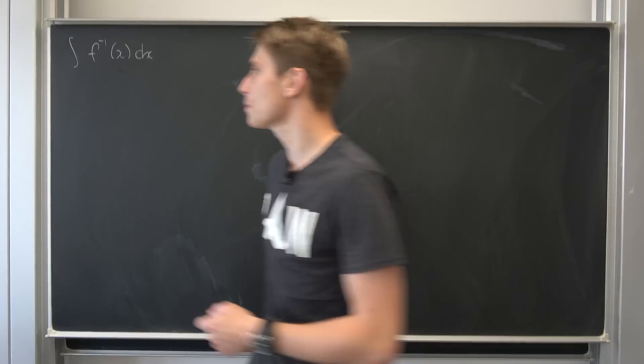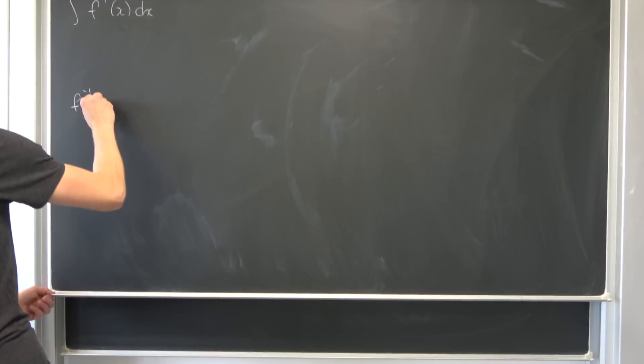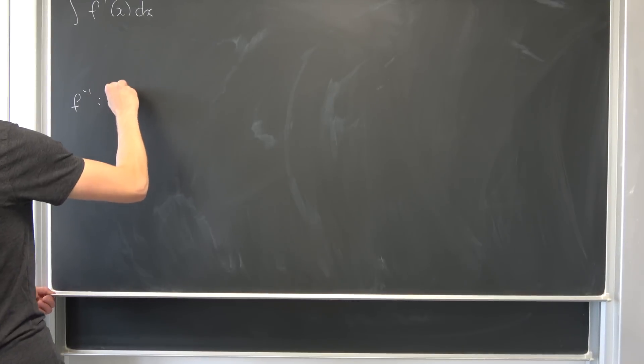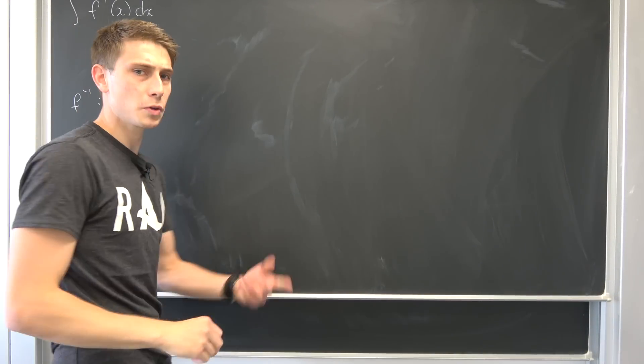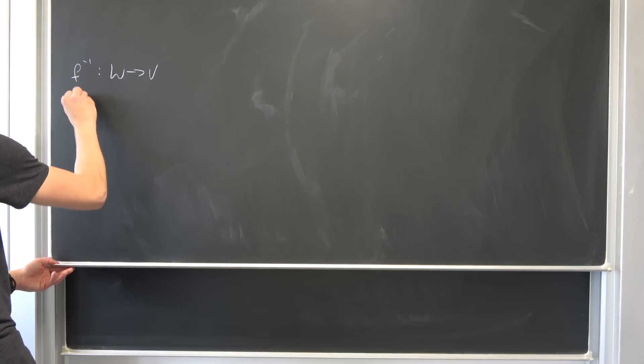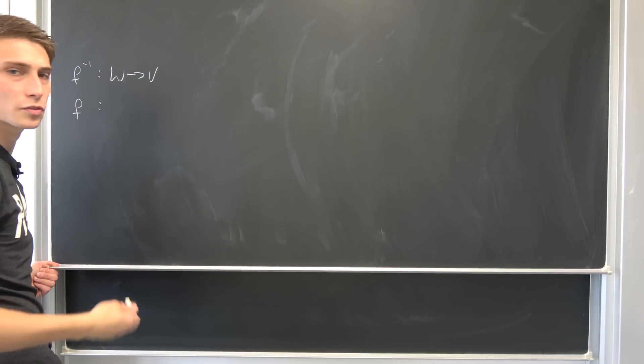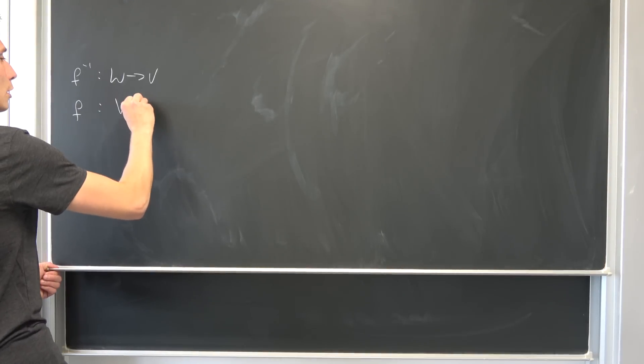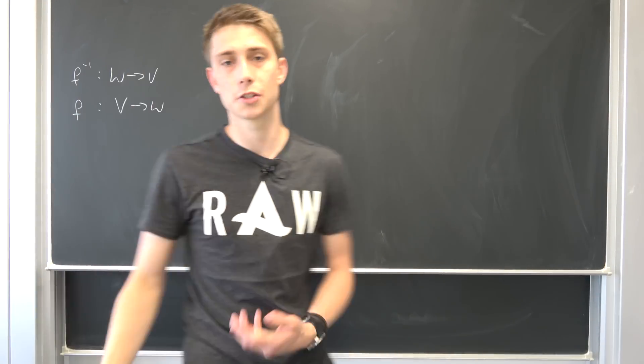What do I mean by that? Suppose we have an inverse function f to the minus 1 from some set W to V, and what we need to suppose is that there's an inverse function to this inverse function, namely just the function itself from the set V to W.